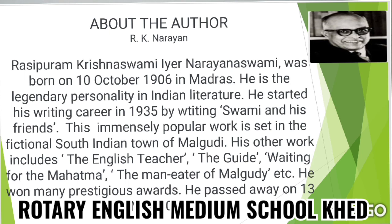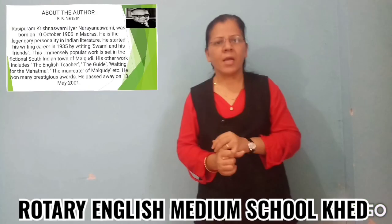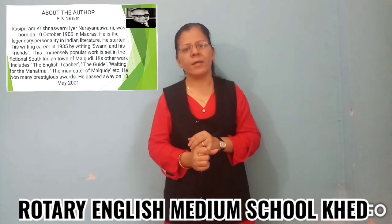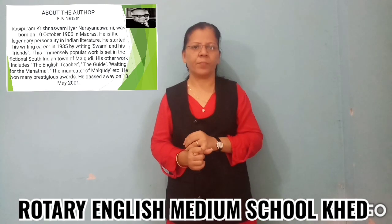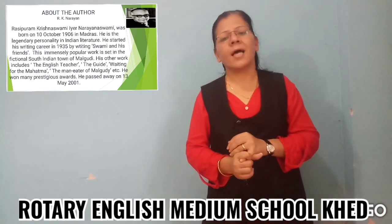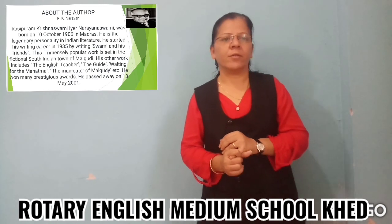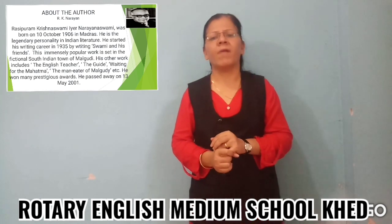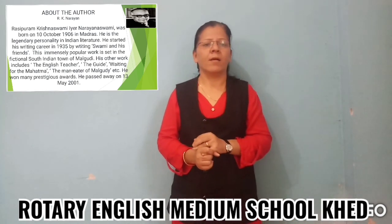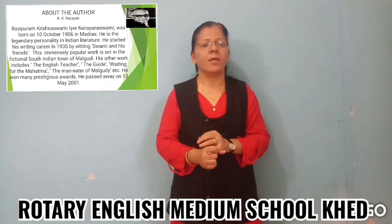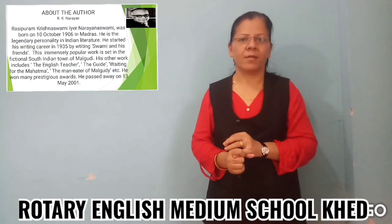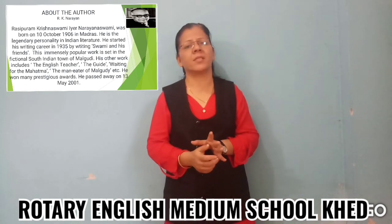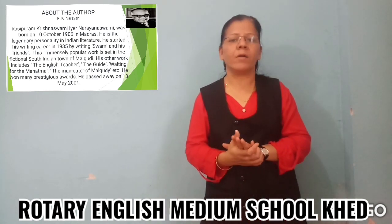R.K. Narayan's full name is Rasipuram Krishnaswami Narayan. He was born on 10th October 1906 in Madras. He is a legendary personality in Indian literature. He started his writing career in 1935 by writing the story 'Swami and His Friends,' which is very famous from the TV series called Malgudi Days.